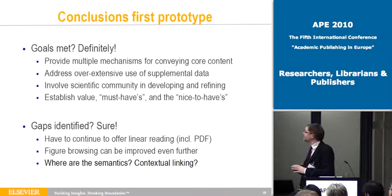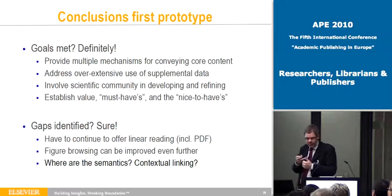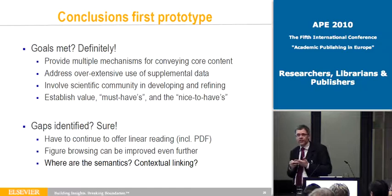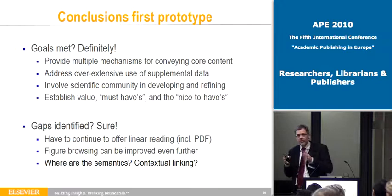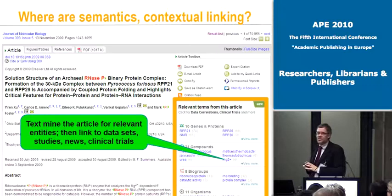Conclusions for this first prototype: did we meet the goals? Did we satisfy users? Yes, definitely. Were there gaps identified? There are still more people than we expected who just wanted to read from top left to bottom right. Figure browsing can still be better — there are still suggestions to look at. And the key question: where are the semantics, where is the contextual linking? That was not part of the prototype, which was really focused on the article presentation itself. But I want to mention two things about semantic contextual links and text mining.